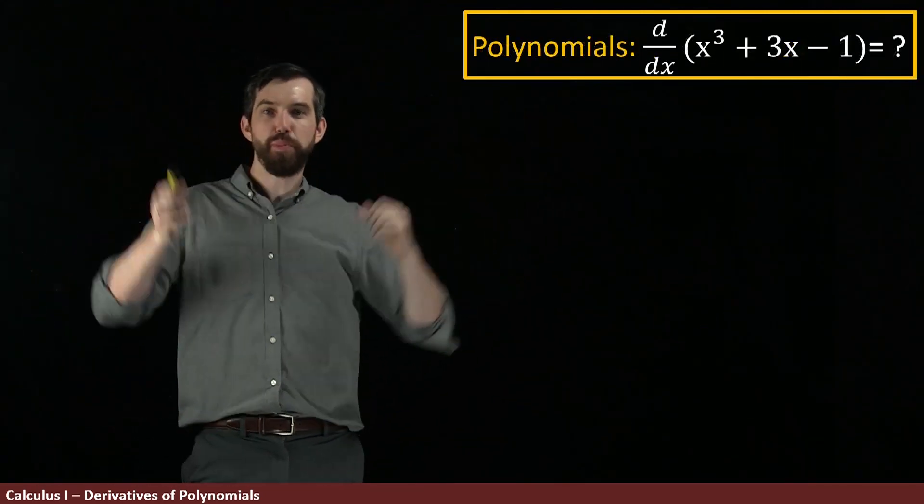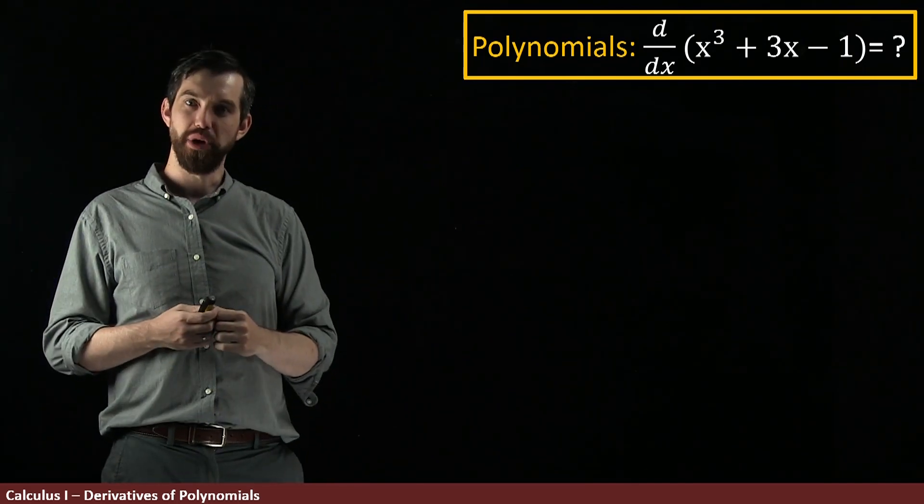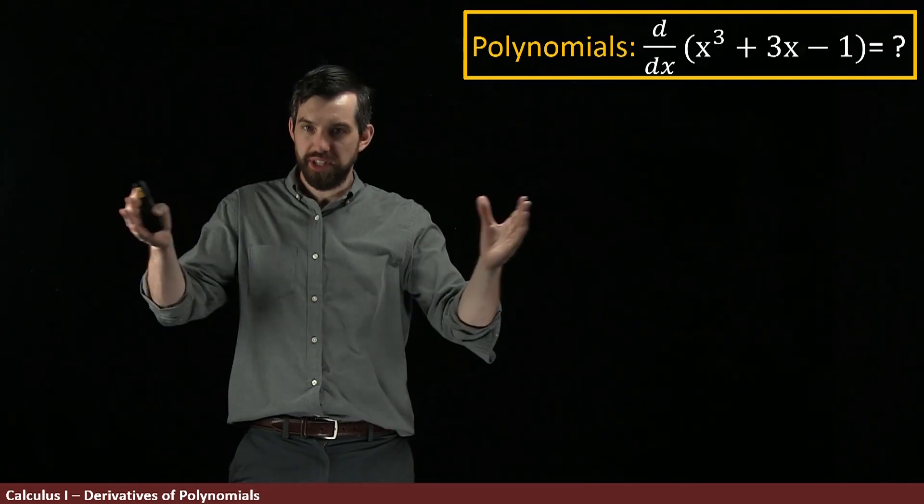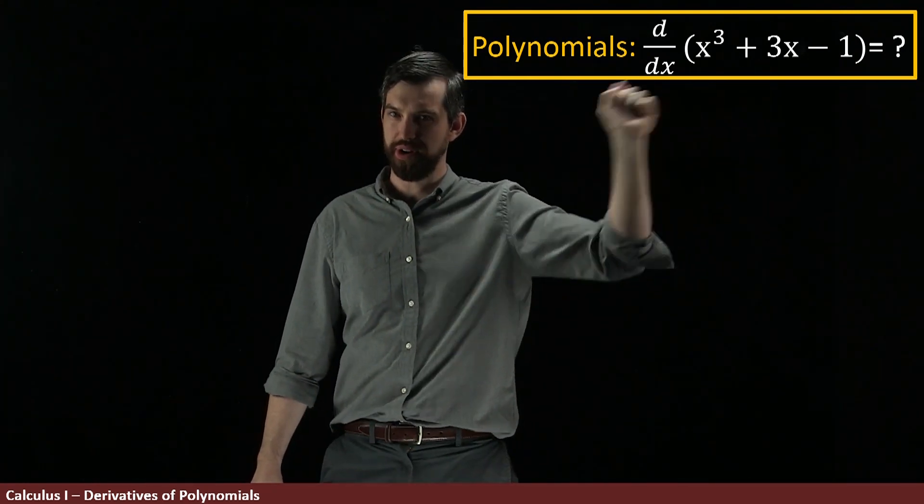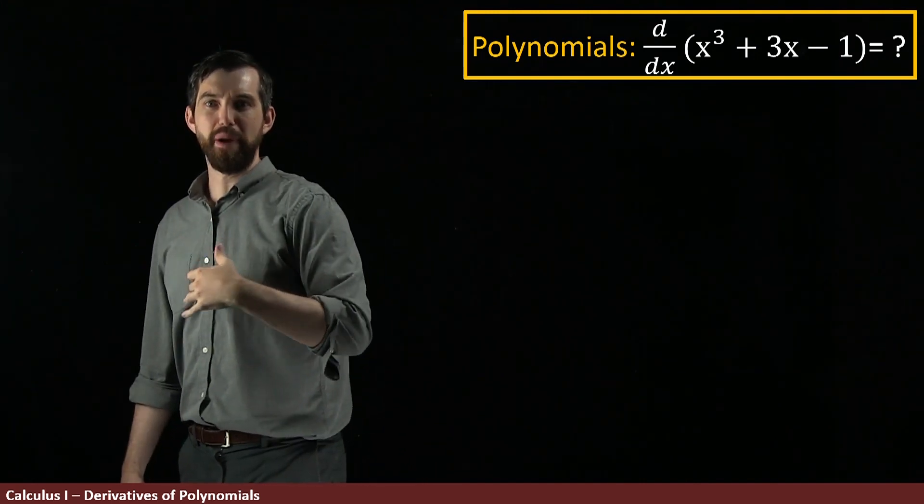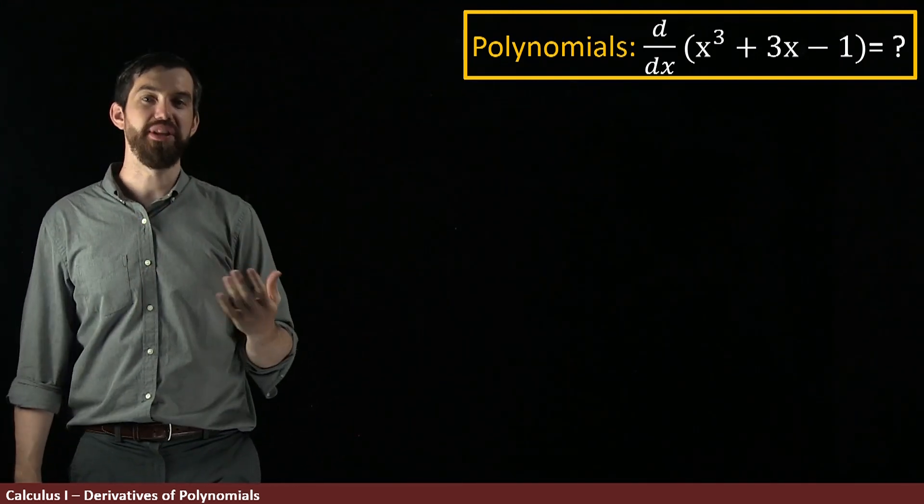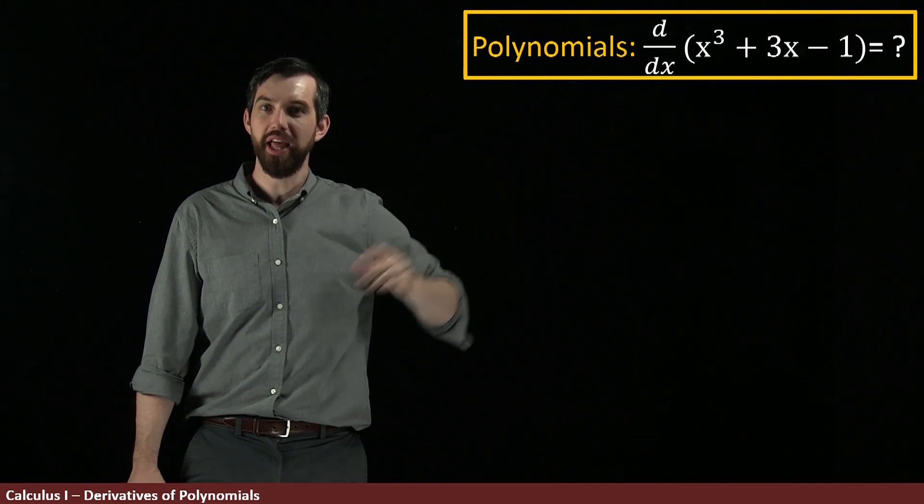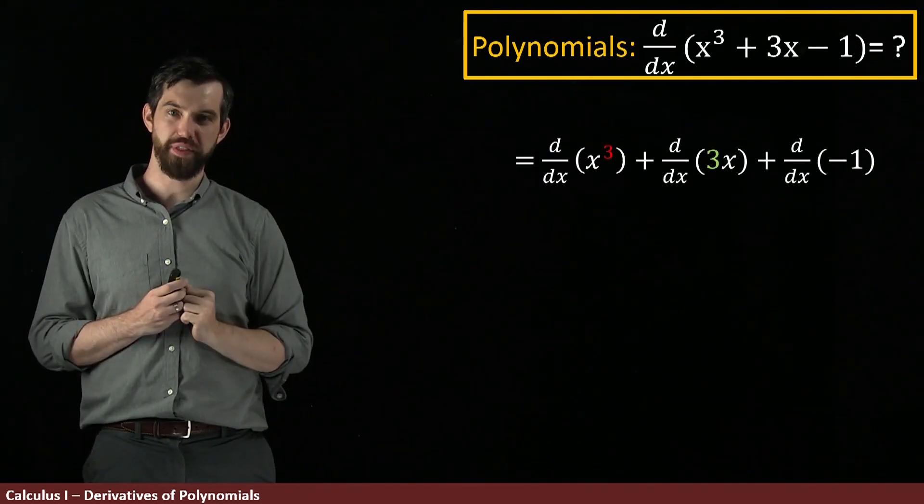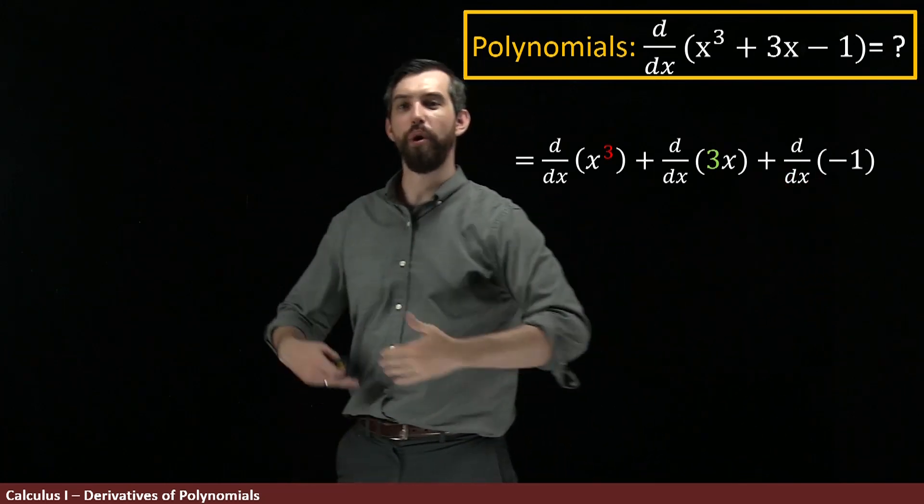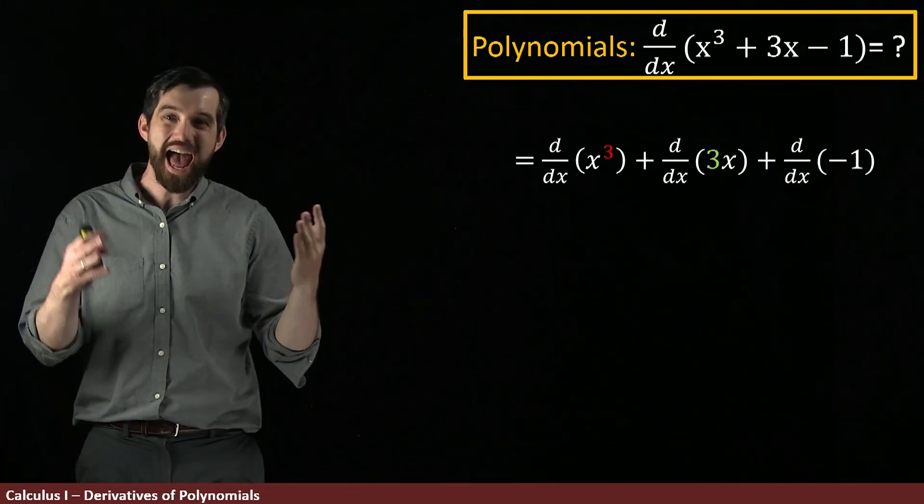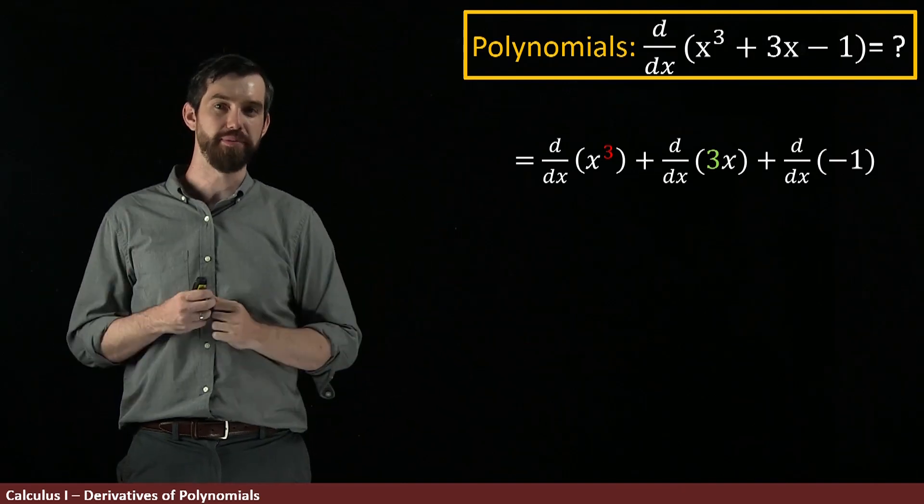All right, so, back to this polynomial that we're trying to figure out. We've decided that, yes, we can deal with sums. And, yes, we can deal with multiplication by scalars like this 3 that's hanging out here. So, my first step is to apply additivity. I say the derivative of this polynomial is going to be the sum of three different things: The first term, the second term, and the third term, where we're taking these derivatives of each individual term. That's additivity applied multiple times.